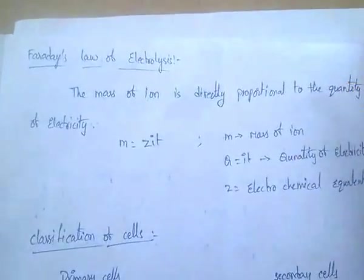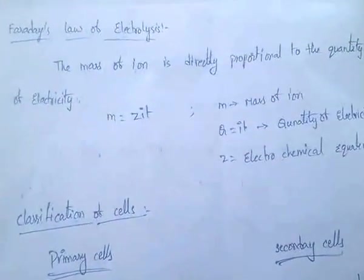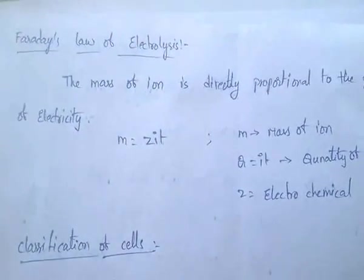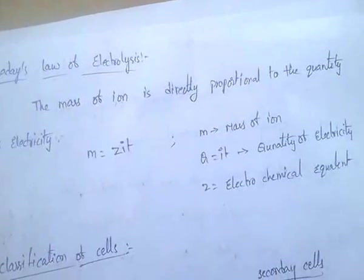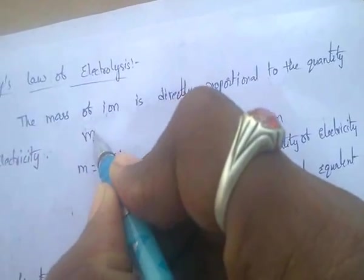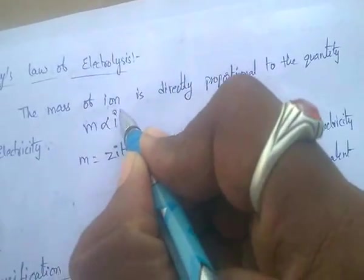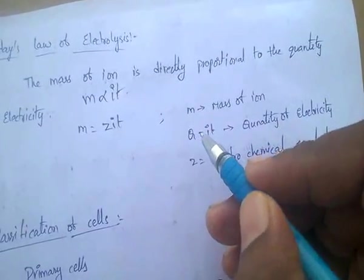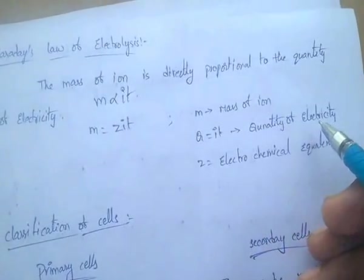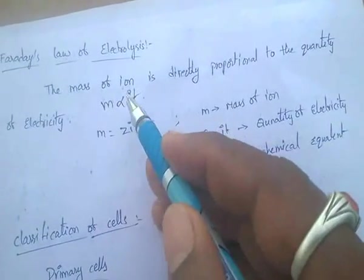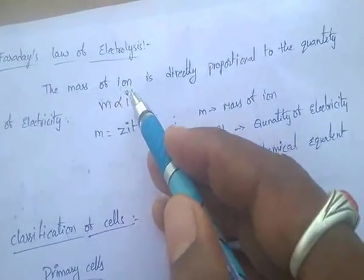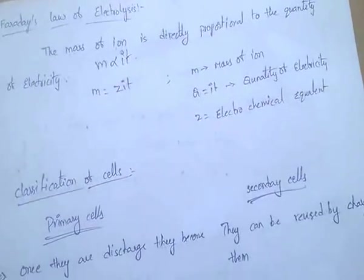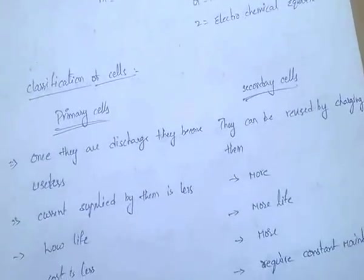Faraday's law of electrolysis: the mass of ion is directly proportional to the quantity of electricity. The quantity of electricity is Q = IT. So the mass of ion M is directly proportional to Q, giving us M = ZIT. This is Faraday's law of electrolysis.